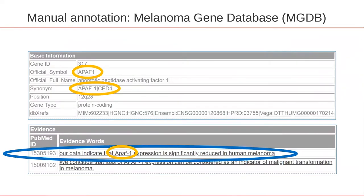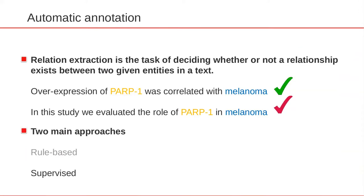We started our work from an existing resource, the Melanoma Gene Database (MGDB). This is a manually curated database that contains information about genes related to melanoma, together with supporting evidence from the literature. This evidence comes in the form of a PubMed reference and the supporting snippet of text from that publication. We want to apply techniques of automated relation extraction to the task of detecting new relationships among genes and melanoma, using the data in MGDB as our training set.